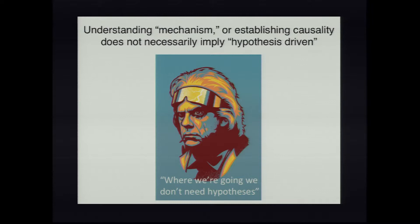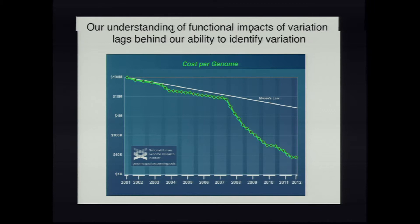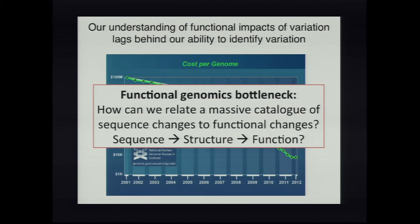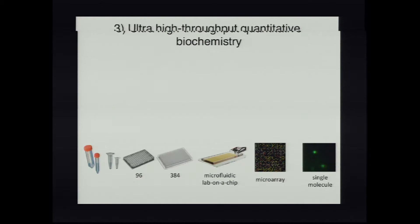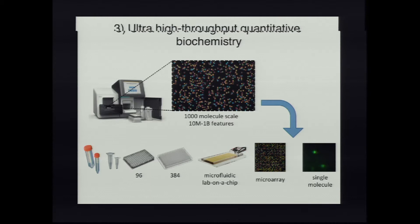Understanding mechanism or establishing causality does not necessarily imply hypothesis-driven. Hypotheses may be a dirty word at NHGRI, but I think we can do hypothesis-less mechanistic studies to understand causation. Here's my pitch for two ways to go about that. This is the tiredest slide in genomics — the functional genomics bottleneck — where we have a really hard time linking sequence variation to structure and function changes in biomolecules. We're interested in doing this in a very quantitative way, extremely high throughput, actually on the sequencing instrument itself. DNA is a combinatorial polymer, so you might want to make combinatorial changes to DNA sequence and see how that affects structure and function.